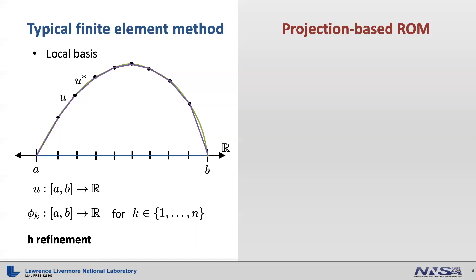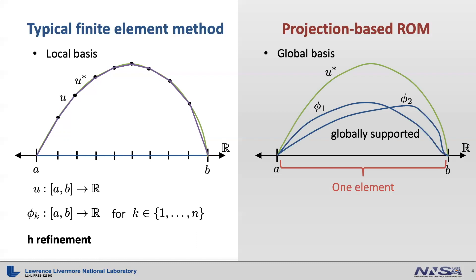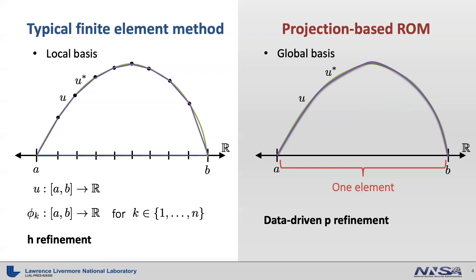However, H refinement does not come for free. As you increase the number of elements, the number of unknowns increases proportionally, which makes the solution process slow. On the other hand, the projection-based reduced order model constructs the global basis. To demonstrate it, here is the same one-dimensional domain and the true solution U star. The projection-based reduced order model considers the whole domain as one element and introduces the globally supported basis that comes from the simulation data. So the projection-based reduced order model tries to find the linear combination of these bases, which best approximates the true solution. Therefore, this can be considered as data-driven P refinement, where P represents the order of the bases. And each basis in the projection-based reduced order model is considered as a high-order basis function. Note that depending on the quality of the reduced bases, we can minimize the number of unknowns tremendously, which allows fast computation with high accuracy.